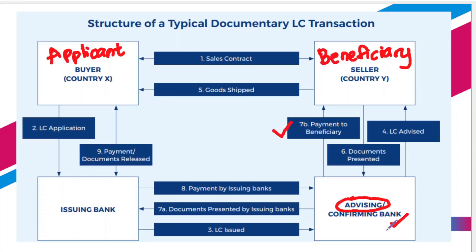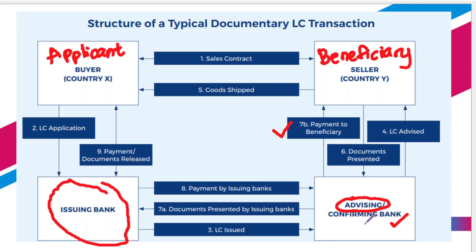That's why when defining the term presenter, it can be the beneficiary, a bank, or any other party making the presentation. Once documents get presented to the issuing bank, they will also verify whether it's a complying presentation. If it is, payment is immediately made to the advising or confirming bank, and then the documents are released to the applicant. If it's at sight, the applicant pays at sight to the issuing bank. If it's by deferred payment or by acceptance, they will either sign the drafts or agree on that day and then pay at maturity. This is the entire structure of the LC with the terms from Article 2 plugged in.